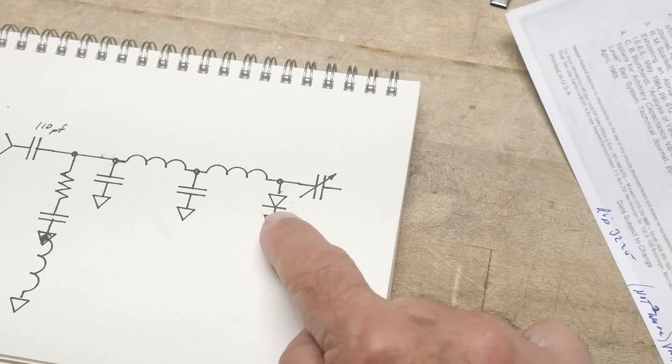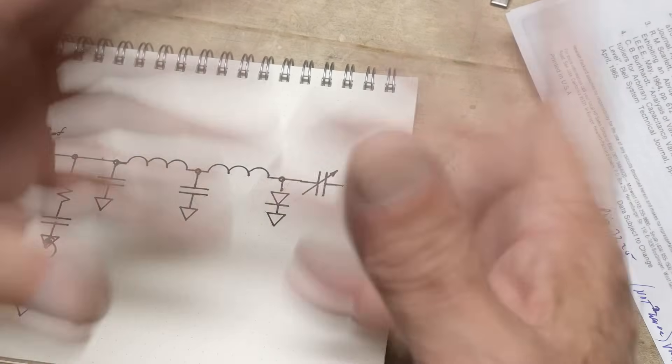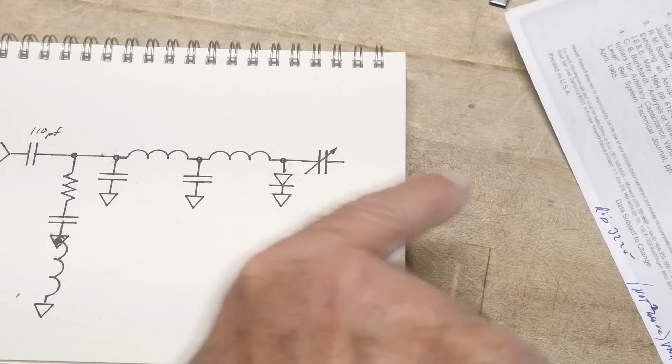Then it goes into the step recovery diode, which is here, generates the harmonics. The harmonics go flying everywhere. This stops them from going that direction and bounces them and makes them go that direction.